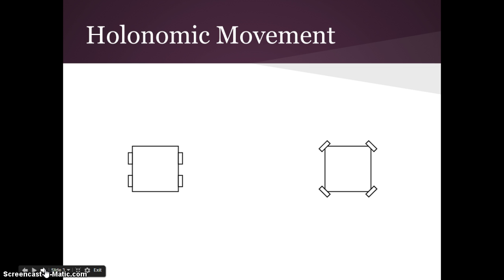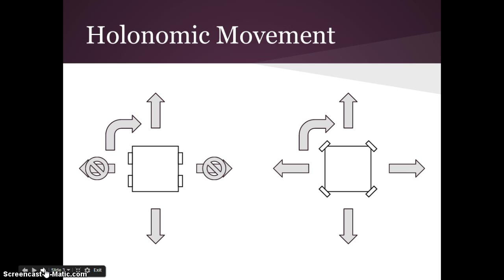One application of Omniwheels is holonomic movement. On the left is a non-holonomic vehicle, on the right is a holonomic vehicle. They can both move forwards and backwards with no problem, and they can both rotate. The difference is that the holonomic vehicle can move left and right freely, while the non-holonomic vehicle can't. This means that holonomic vehicles are better suited to areas where there is a high need for maneuverability.